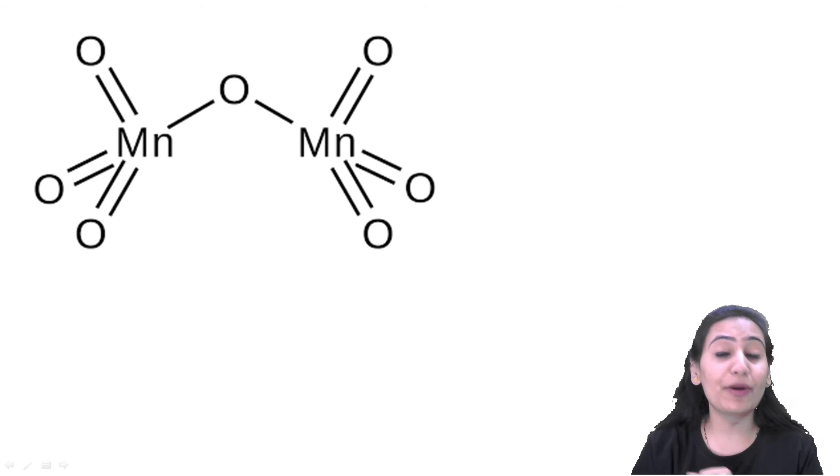Now, Mn2O7 is a highly explosive compound. This compound is unstable and decomposes into MnO2 with the release of oxygen.